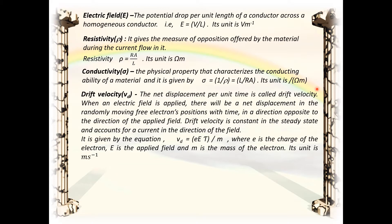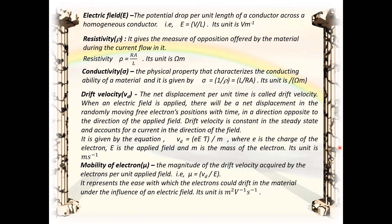When an electric field is applied, there will be a net displacement in the randomly moving free electrons' positions with time in a direction opposite to the applied field. Drift velocity is constant in steady state and accounts for a current in the direction of the field. It is given by v_d = eEτ/m, where e is the charge of the electron, E is the applied field, and m is the mass of the electron; its unit is meter per second. Mobility of electrons μ — the magnitude of drift velocity acquired per unit applied field; μ = v_d/E; its unit is meter square per ohm second.